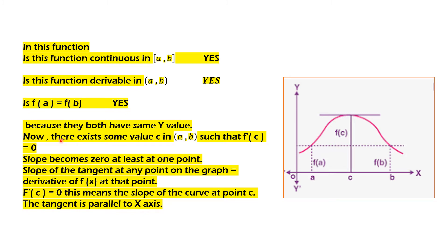First three postulates are met. There exists some value c in this open interval such that f'(c) is equal to 0. This is saying that there should be one value between this a point and this b point — at least one value of c such that f'(c) becomes 0, meaning the slope becomes 0 at at least one point. The slope of the tangent at any point on the graph equals the derivative of the function at that point. At this c point, if you draw the tangent, it is parallel to the x-axis, meaning the derivative is 0 and f'(c) equals 0.